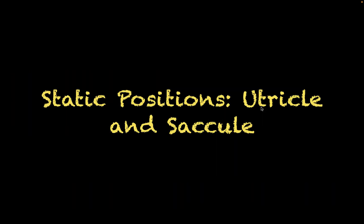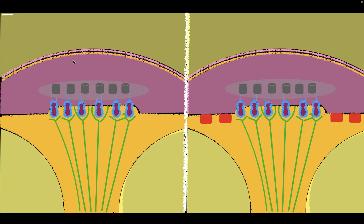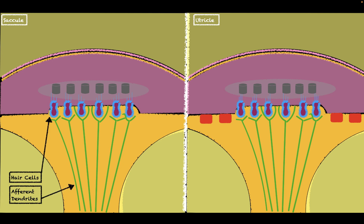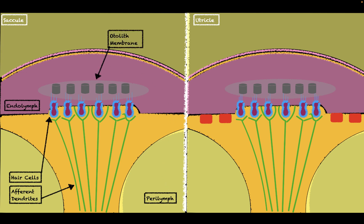Let's talk about the utricle and saccule specifically. The important parts include the hair cells, the afferent dendrites which receive signals from the hair cells, the perilymph, the endolymph, and the otolith membrane. The otolith membrane surrounds calcium carbonate crystals and is attached to the hair cells, acting as a weight which aids in moving the hair fibers and therefore increases the strength of the signal. The reversal line is another important region — in the saccule, the kinocilium of each hair bundle faces away from this midline.